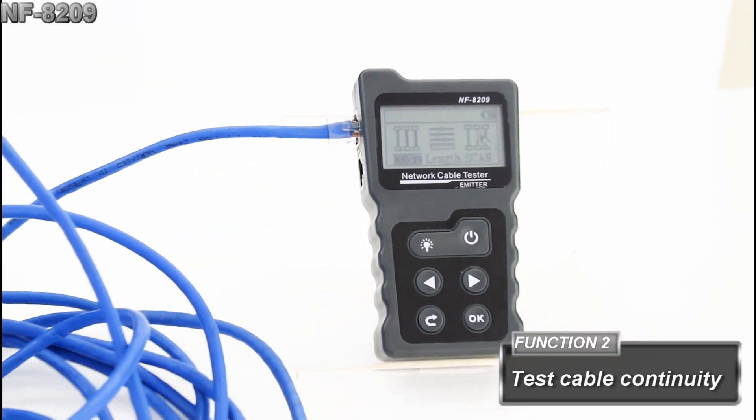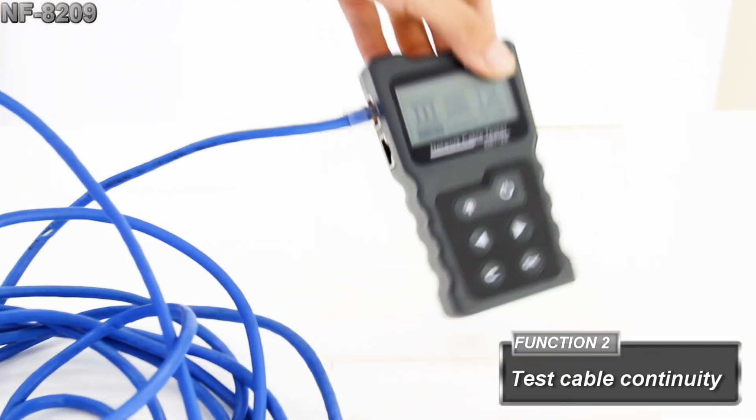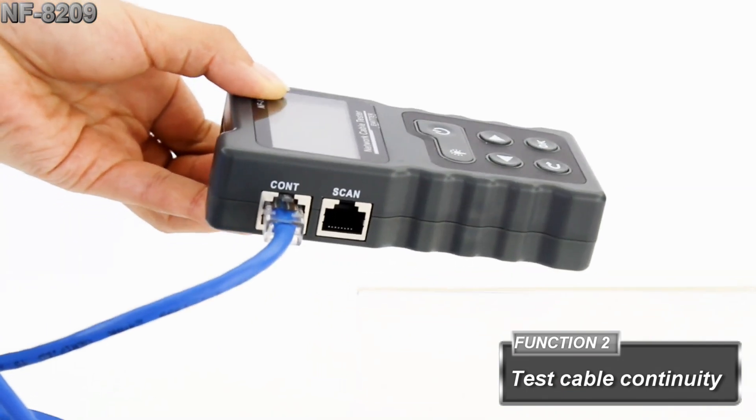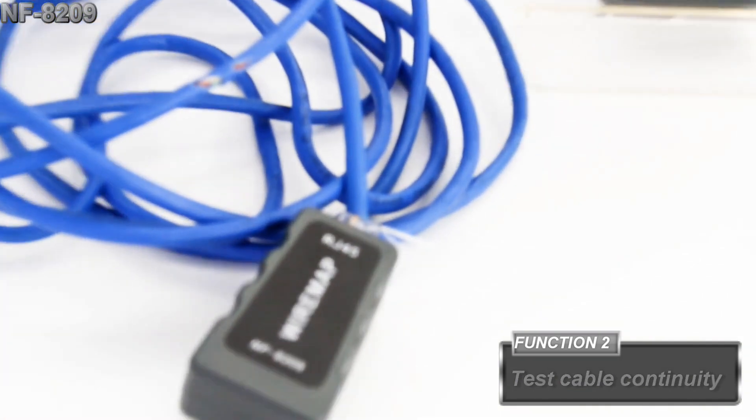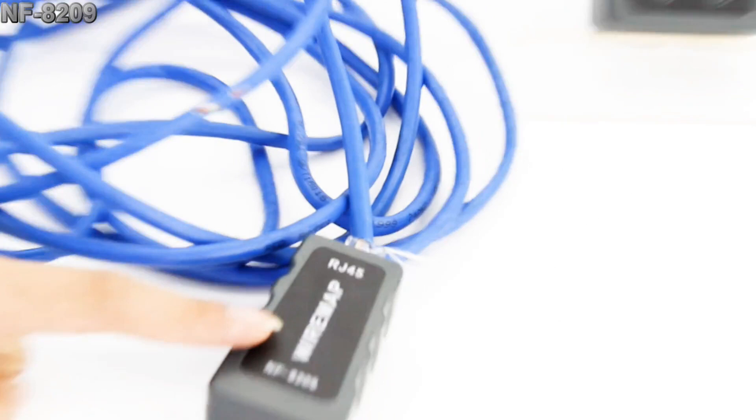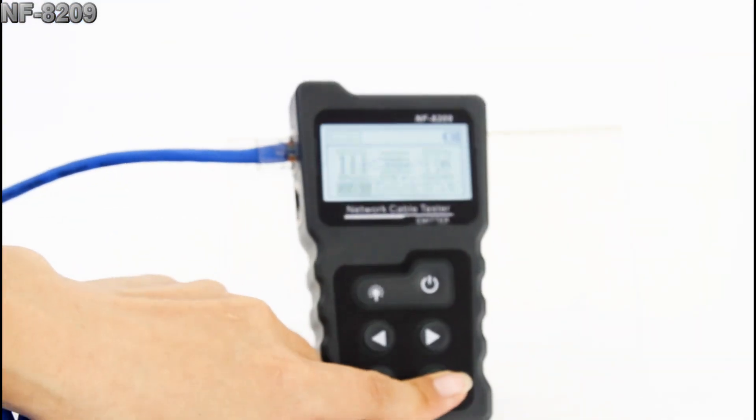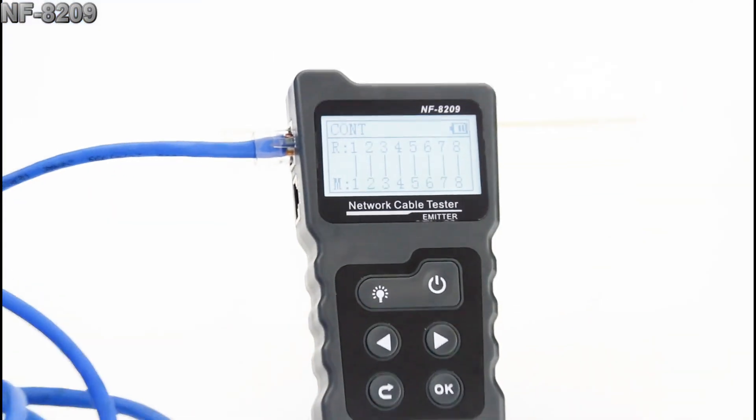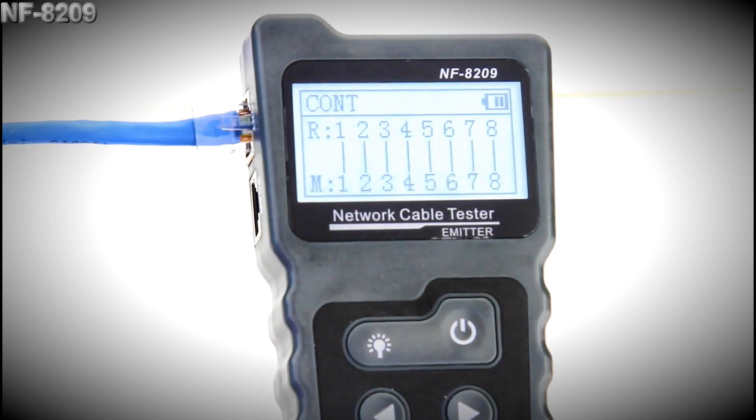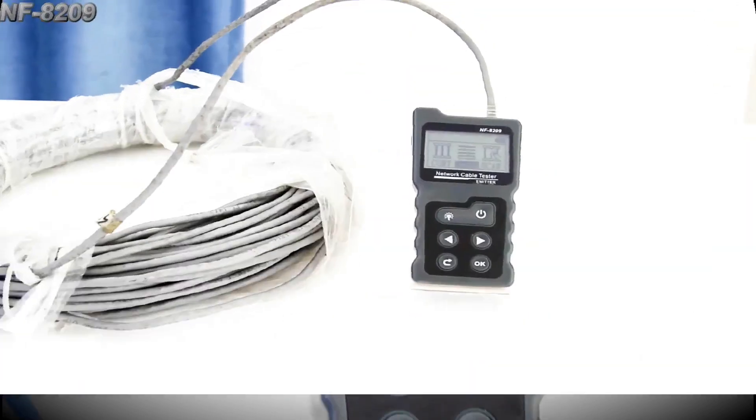Let's move on to the continuity testing. We put one end in the continuity port and the other end in the remote. The test will be showing on the screen. We can see the numbers are in order, which means the cable is working.